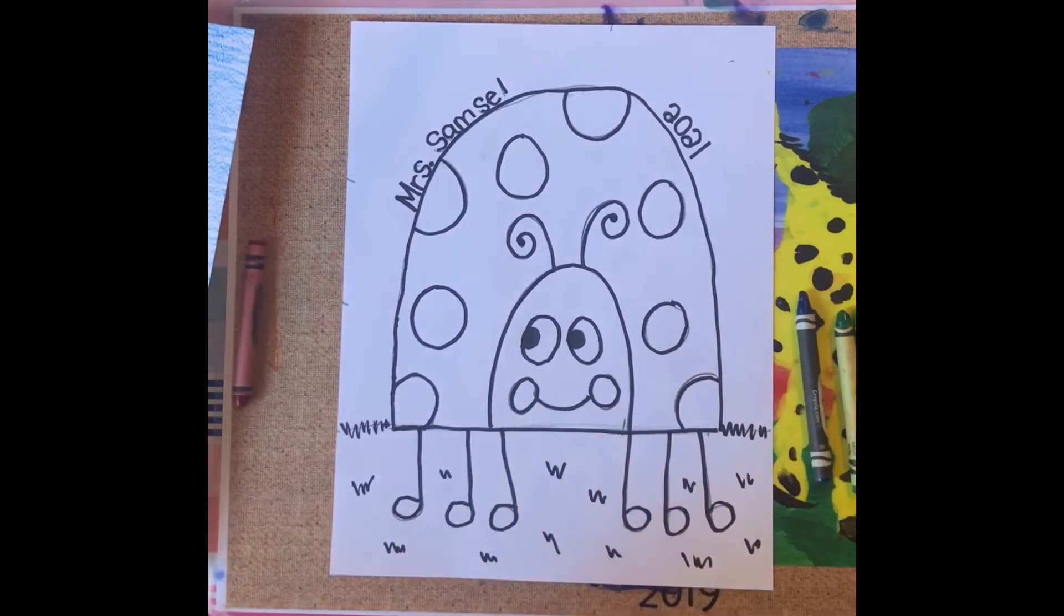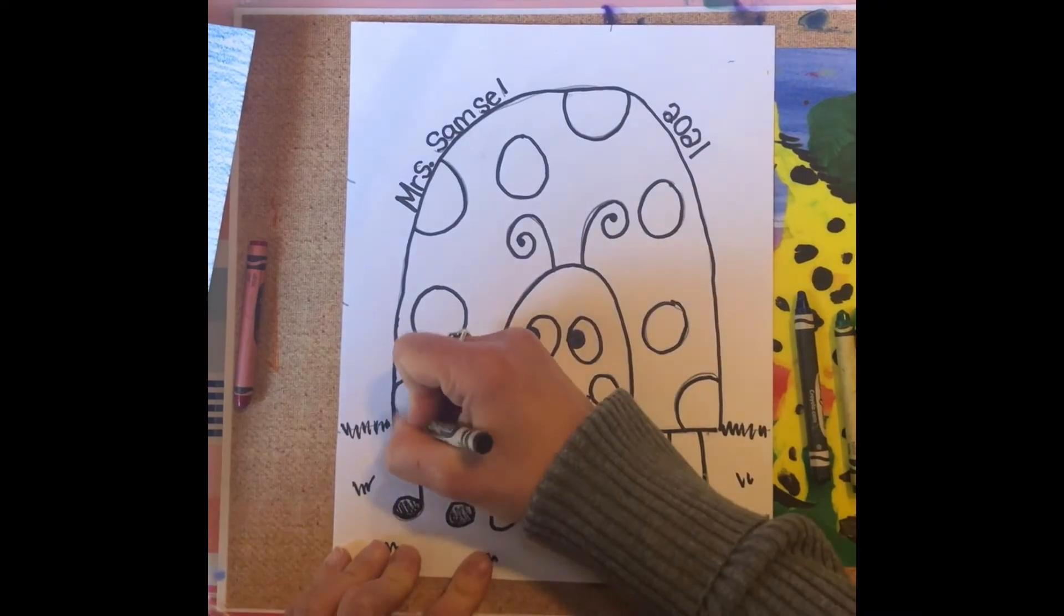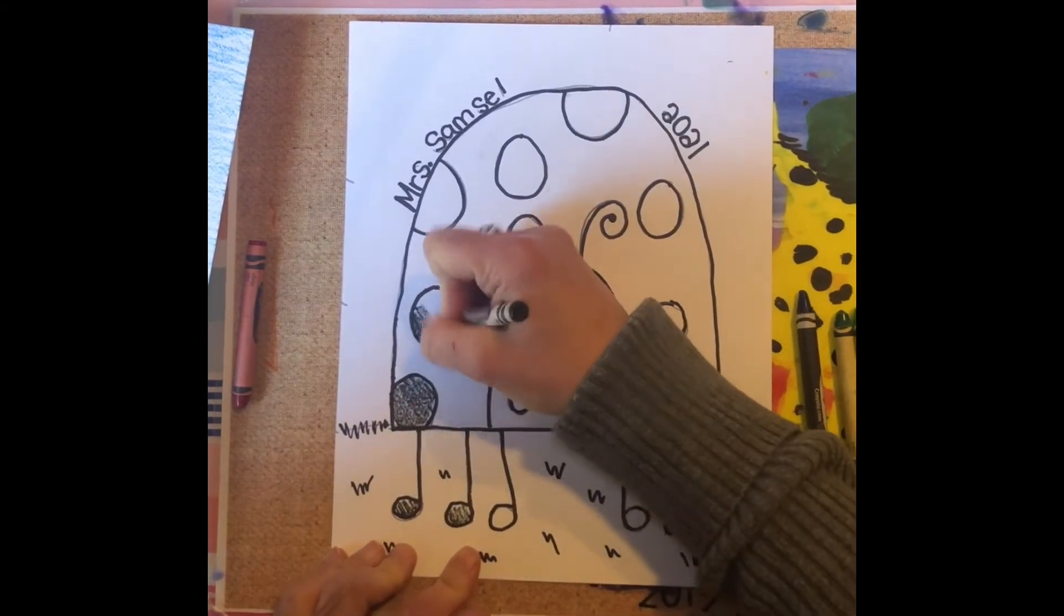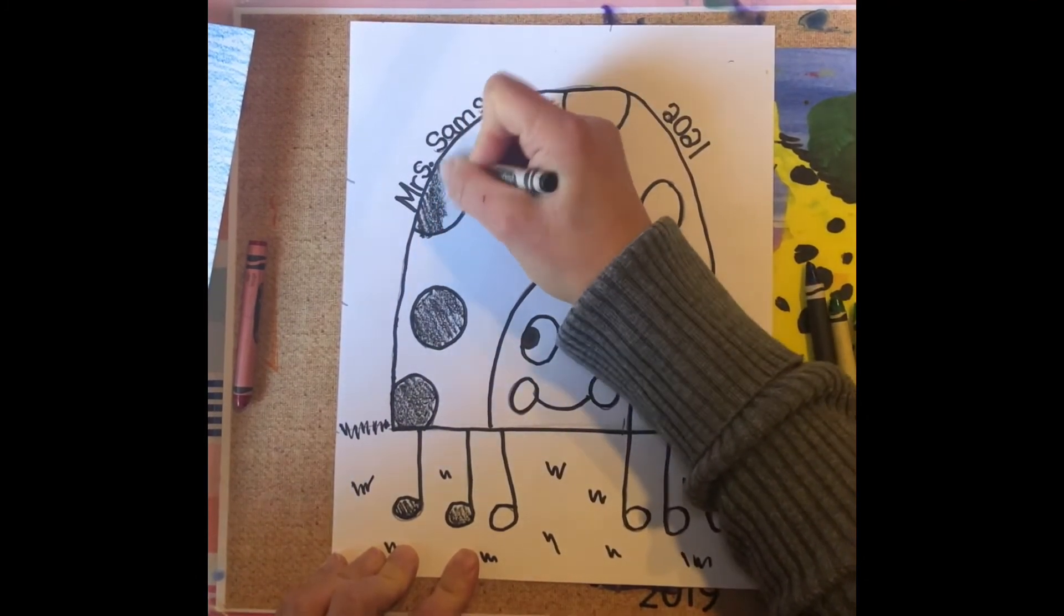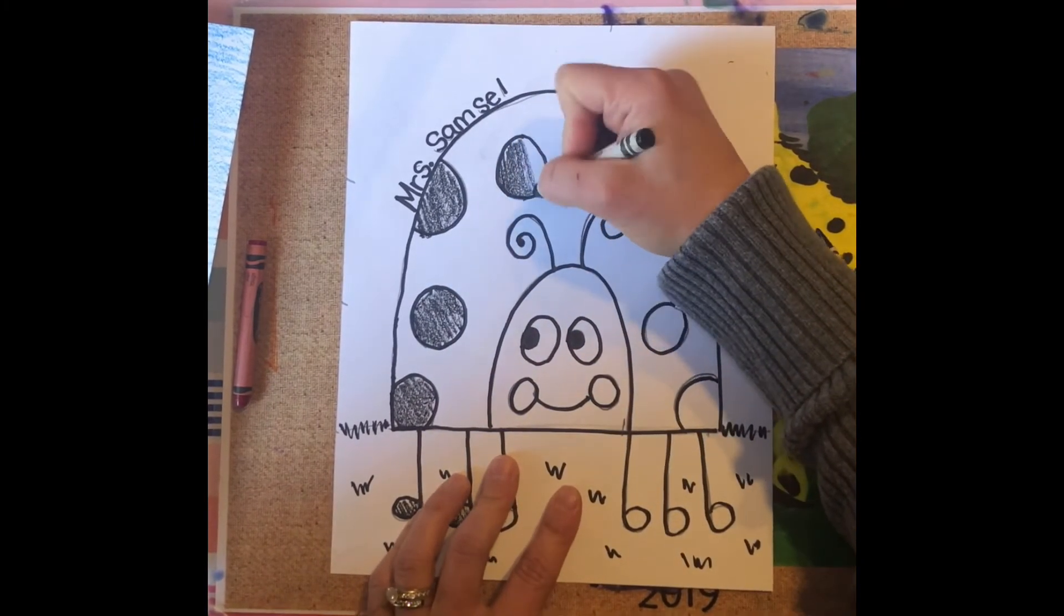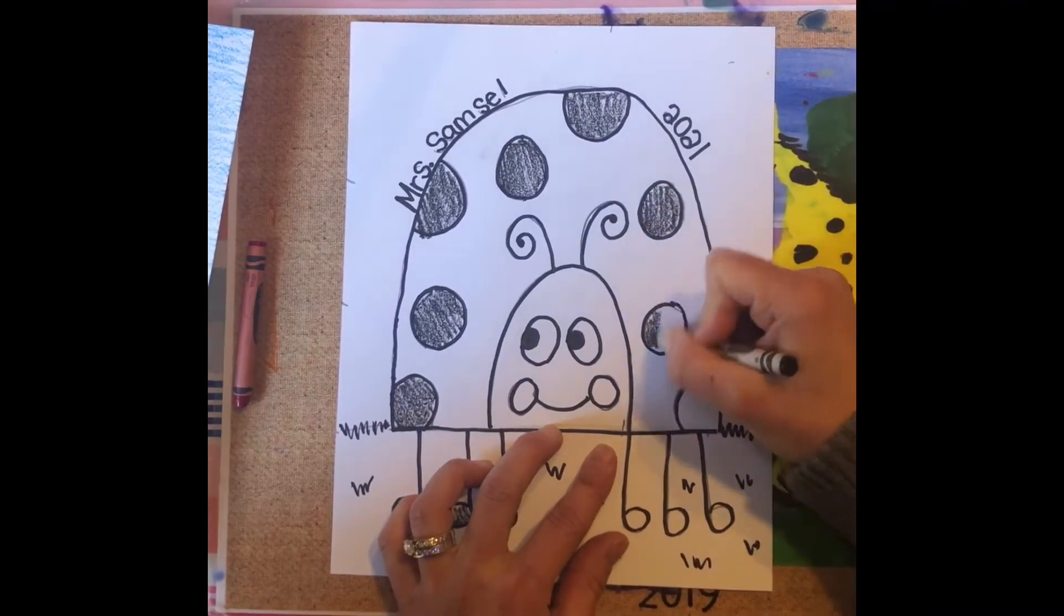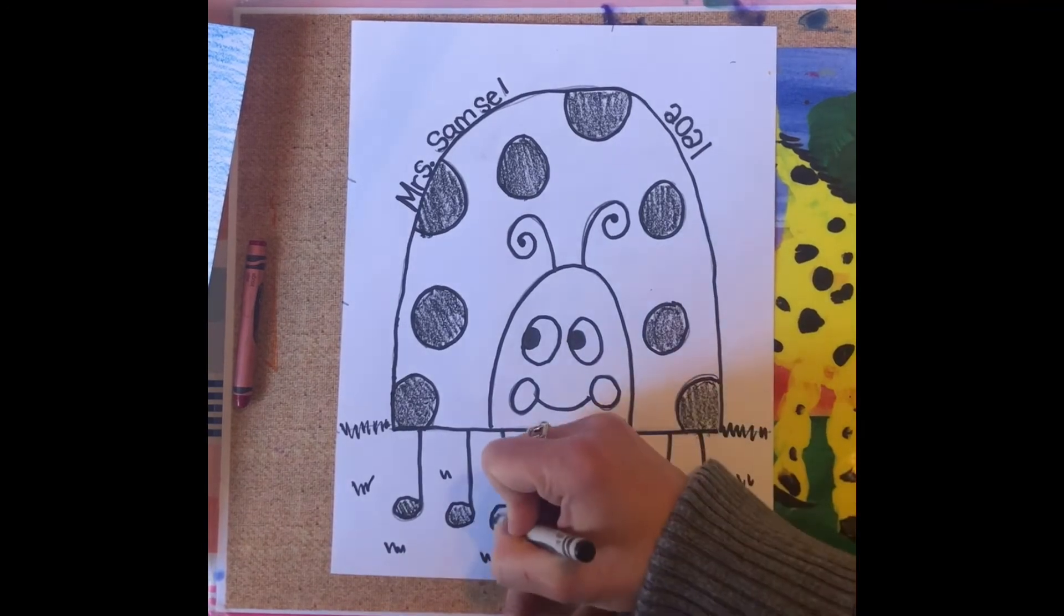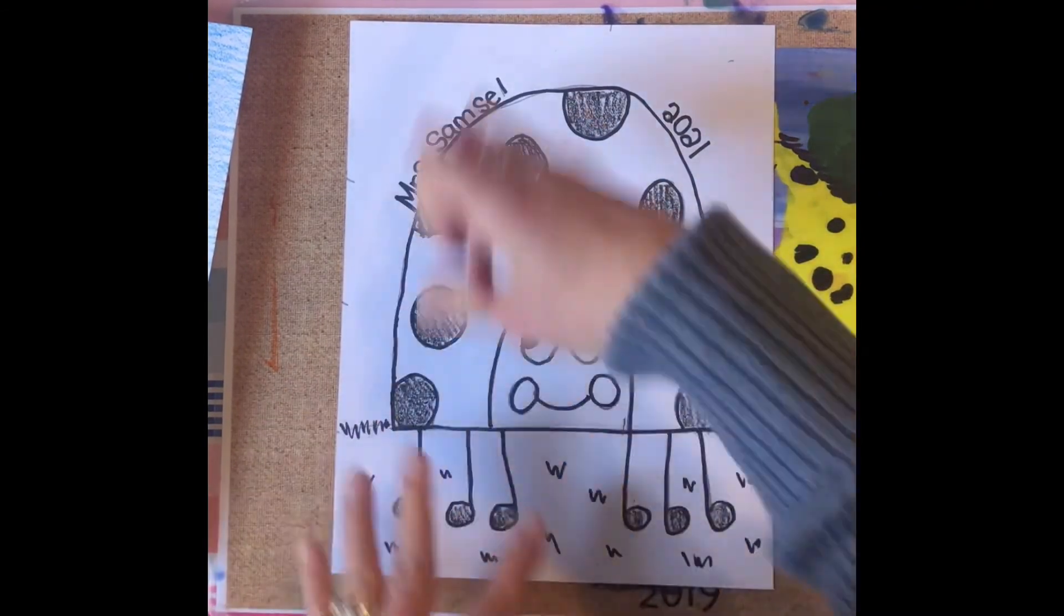And now we can start coloring. So I'm going to start coloring with those black dots and black feet. When you color, you want to color in every section solid and do your very best not to scribble. We want this to, as always, be high quality artwork that we're proud of. We've done a really good job on this adorable ladybug drawing. So when I go to color these large areas, I don't want to scribble outside of the lines.